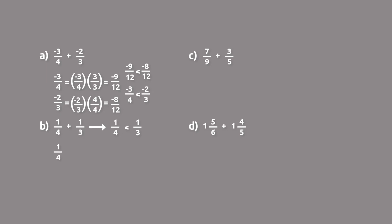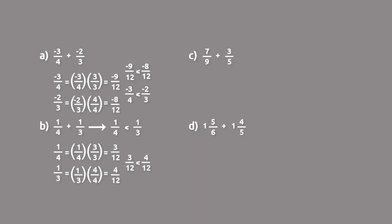So 1 fourth — we again want 12 as our denominator, the least common multiple of 4 and 3. So 1 fourth times 3 over 3 equals 3 twelfths, and 1 third times 4 over 4 equals 4 twelfths. And 3 twelfths is indeed less than 4 twelfths. Therefore we verified that 1 fourth is less than 1 third. With the same numerator but different denominators, the value with the biggest denominator is less than the value with the smallest denominator.